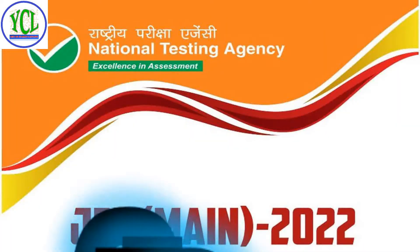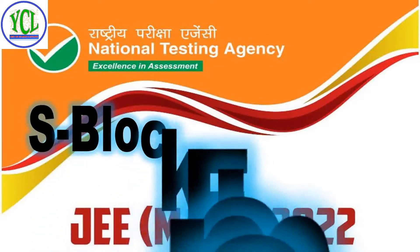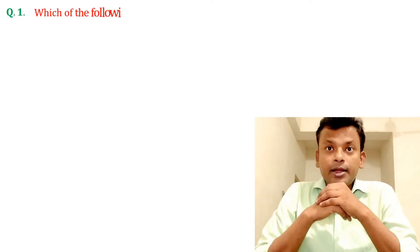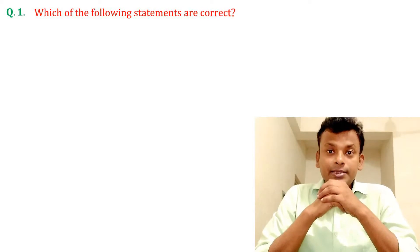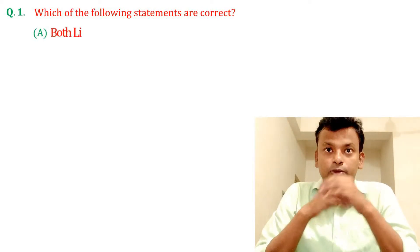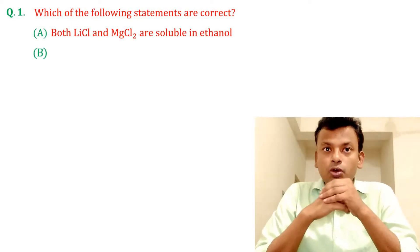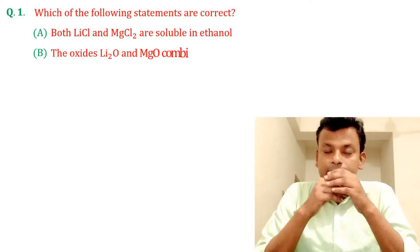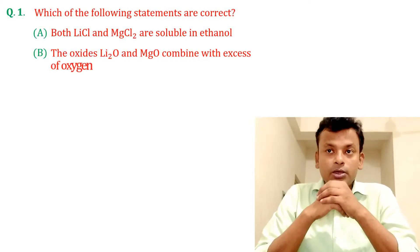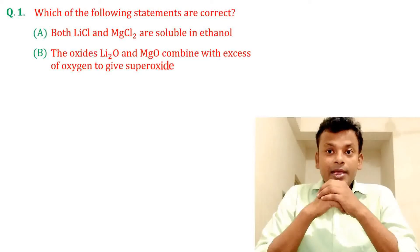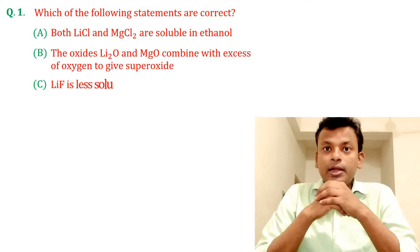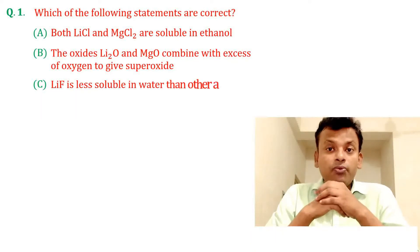Now watch the whiteboard. Question number 1: Which of the following statements are correct? A. Both LiCl and MgCl2 are soluble in ethanol. B. The oxides Li2O and MgO combine with excess of oxygen to give superoxide. C. LiF is less soluble in water than other alkali metal fluorides.